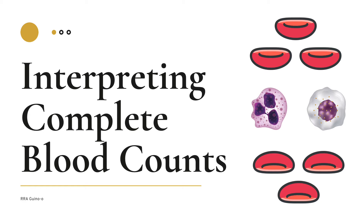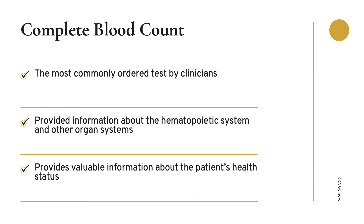Hi everyone, today we will be discussing interpreting our complete blood count results. The complete blood count is the most commonly ordered test by clinicians, and it involves a variety of parameters ranging from red blood cells, white blood cells, as well as platelets. It provides information about the hematopoietic system as well as other organ systems that might contribute to abnormal CBC results, offering valuable information about the patient's health status.